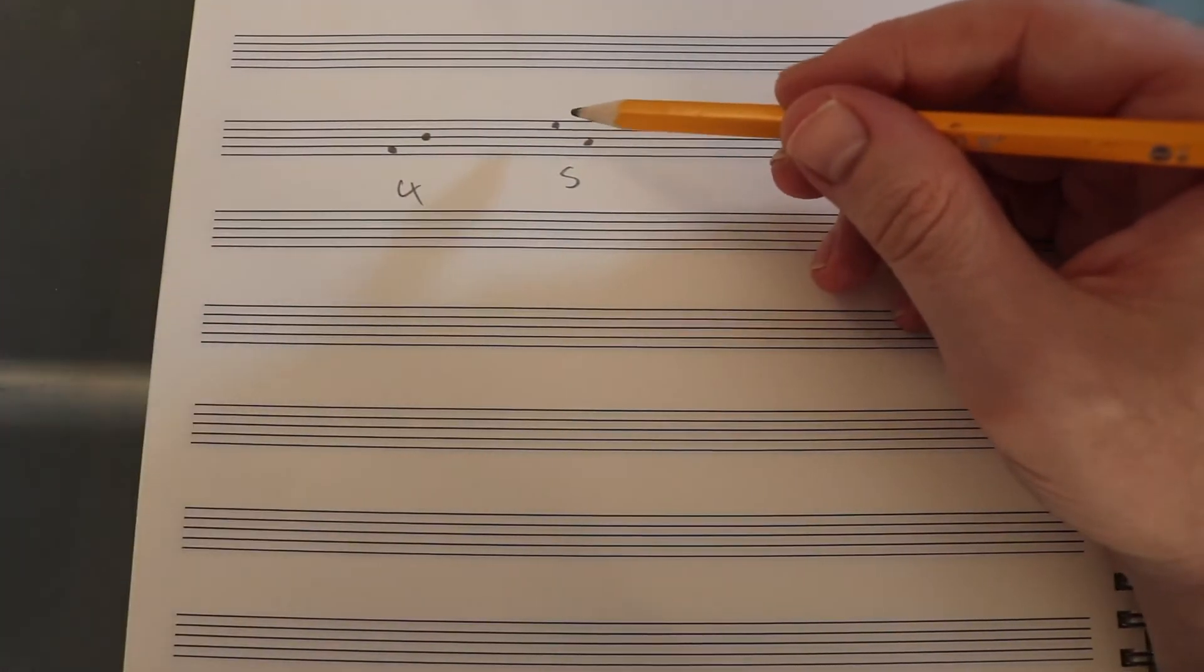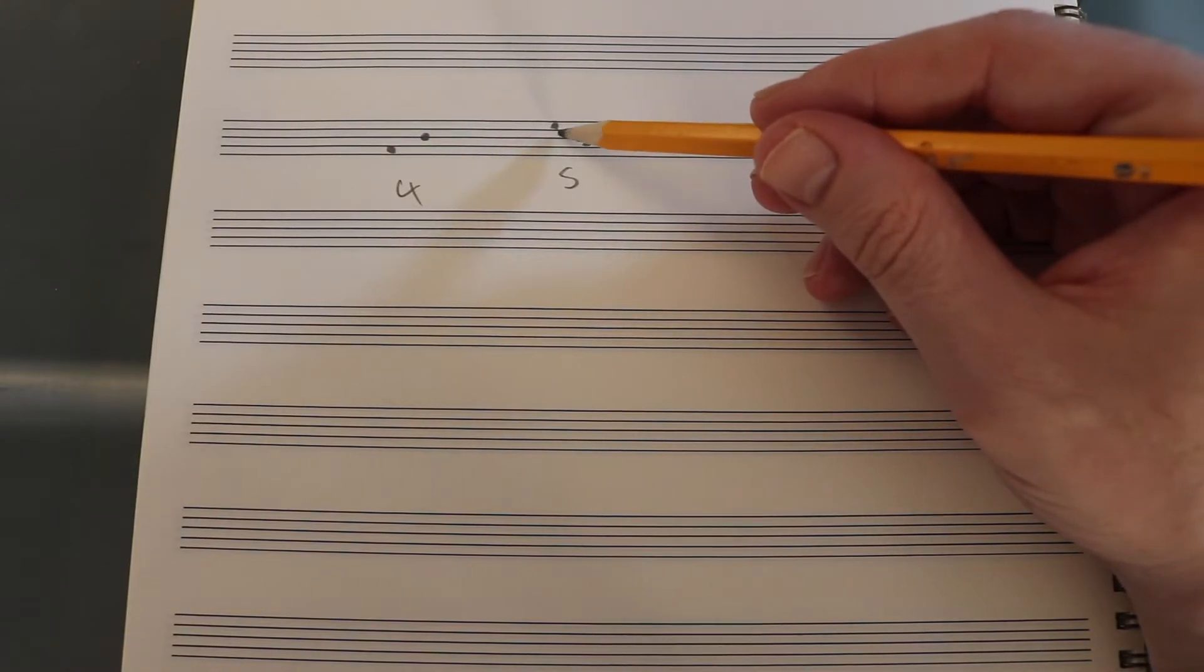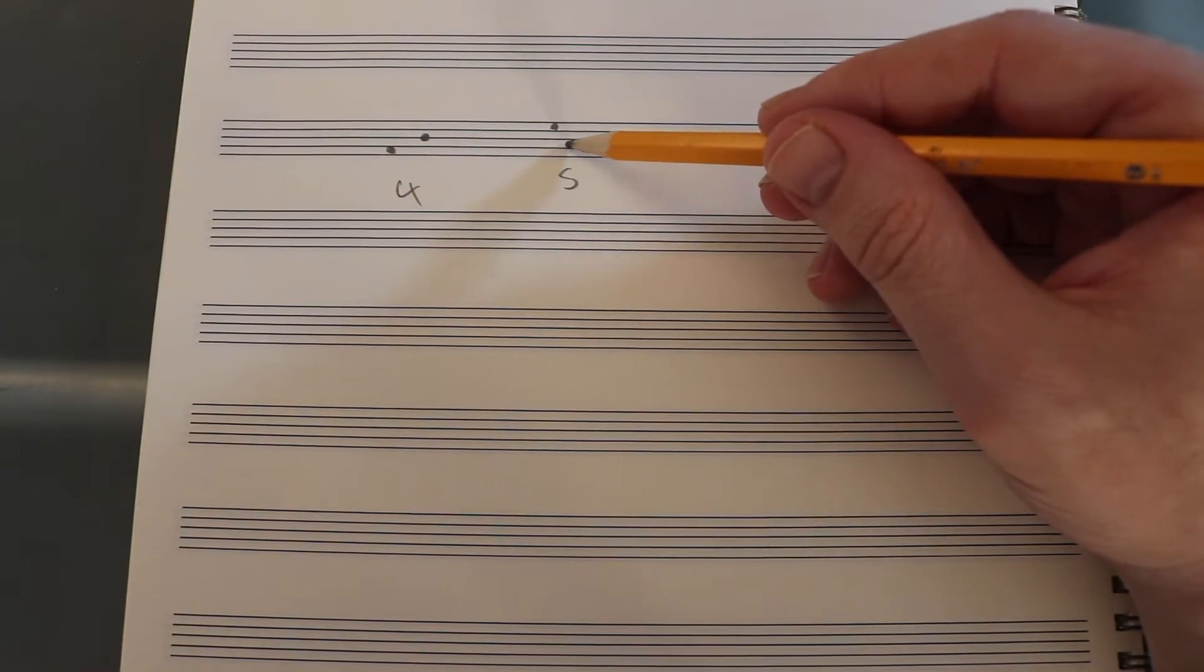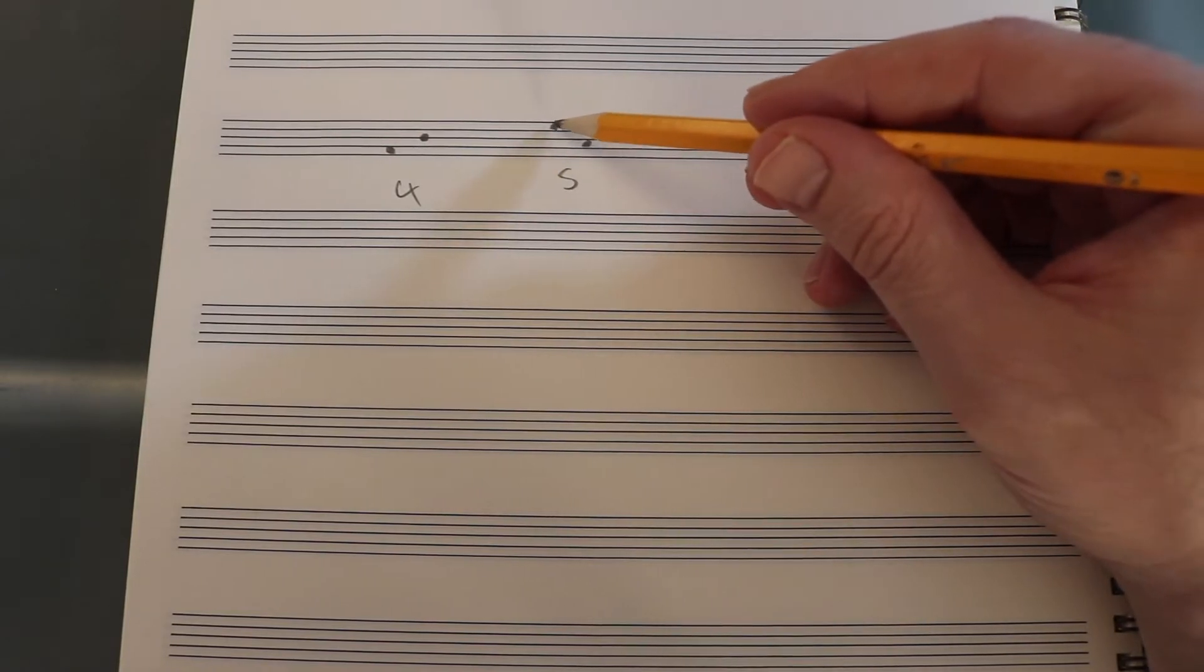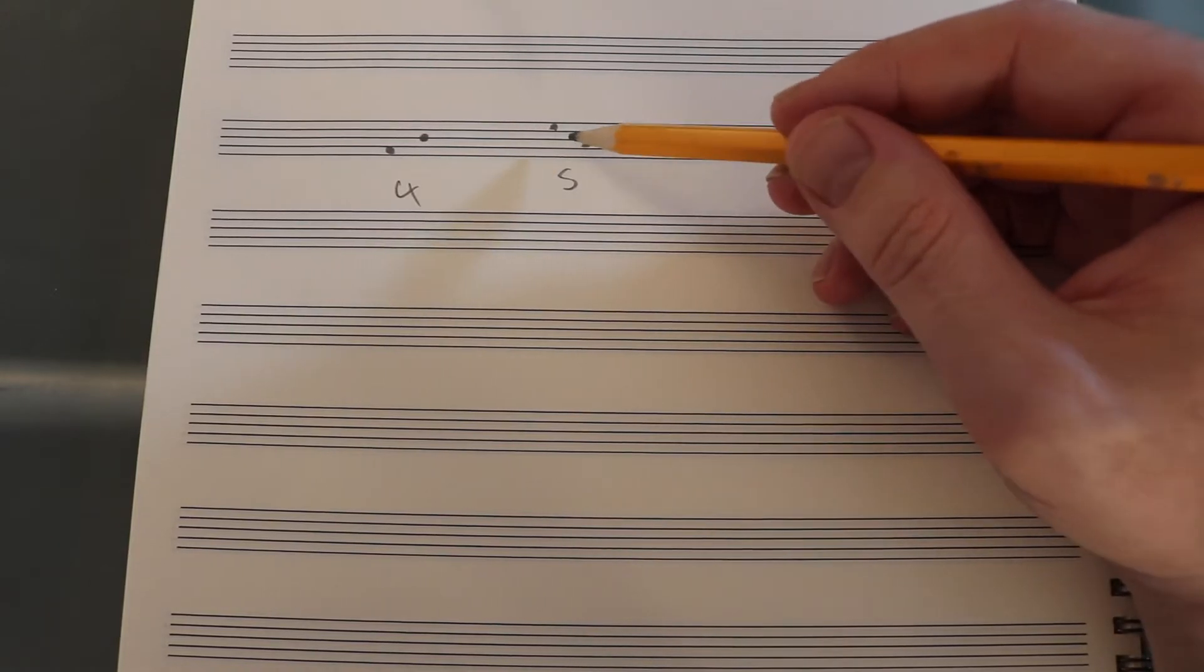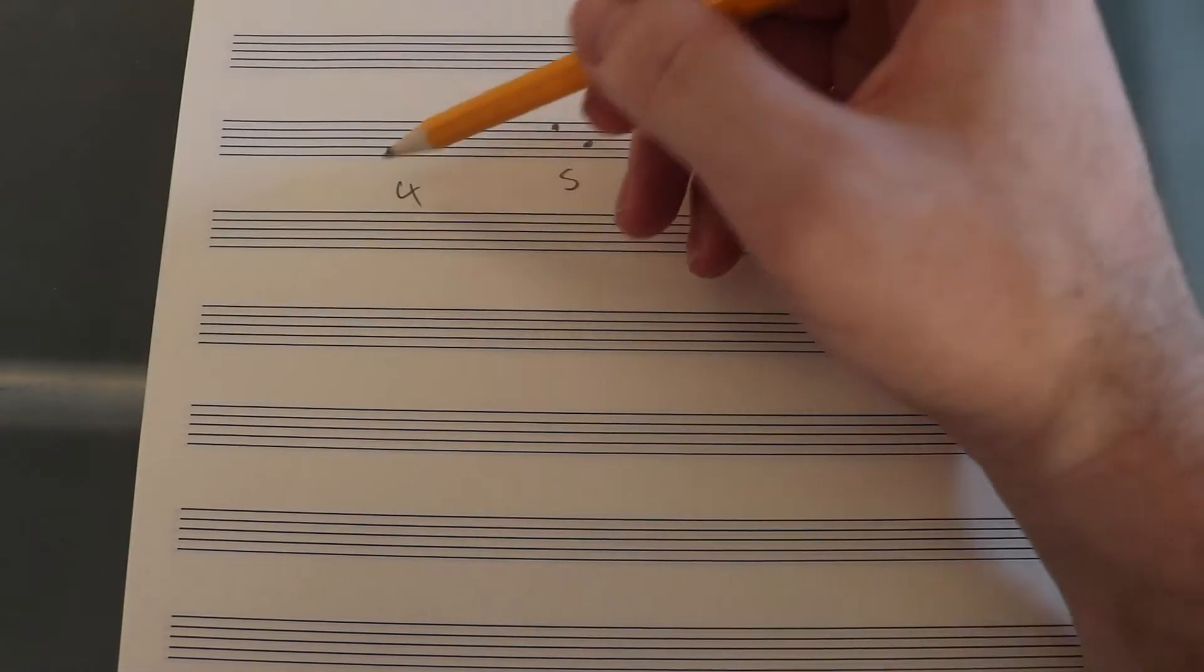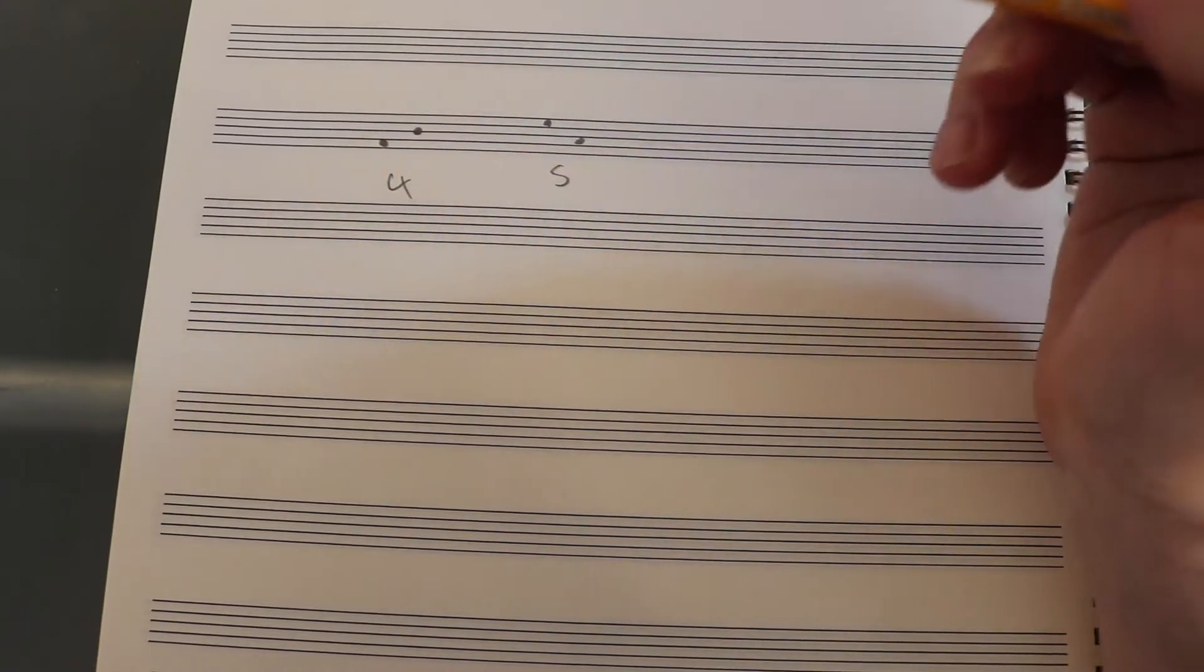By the way, you can start getting fast at them by just recognizing, okay, I'm going from a space and I'm skipping another space and going to another space, or from a line, another line, and another line. If you went from a space to a space or a line to a line, you would always get a third. If you go one more, you'll always get a fifth.